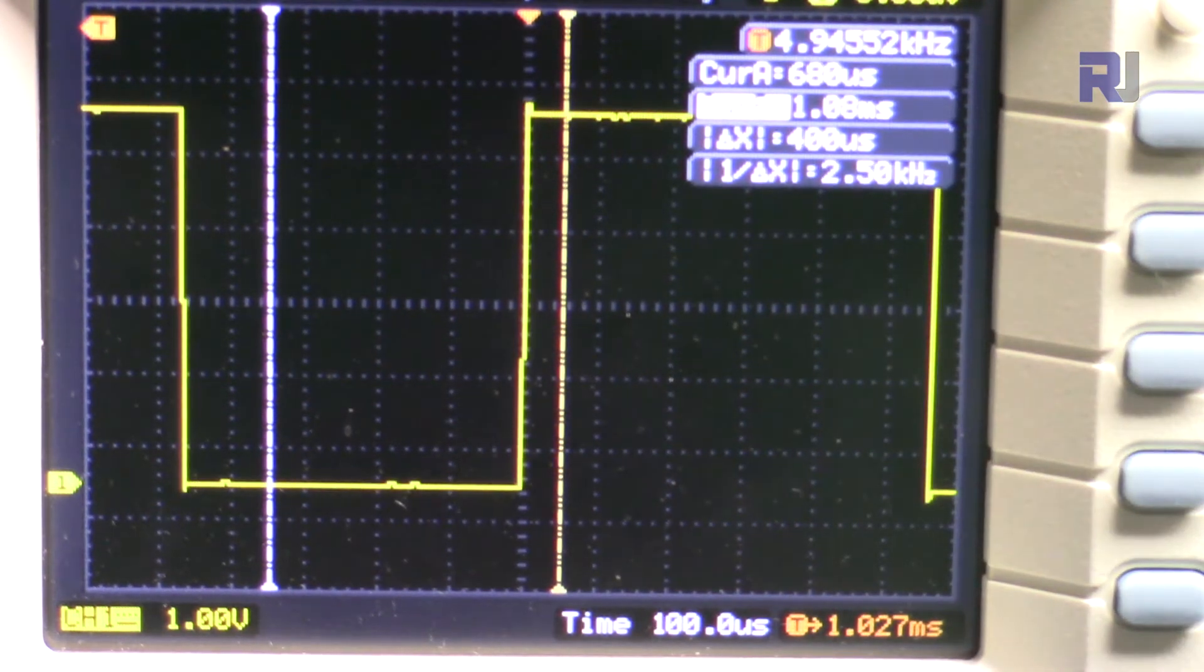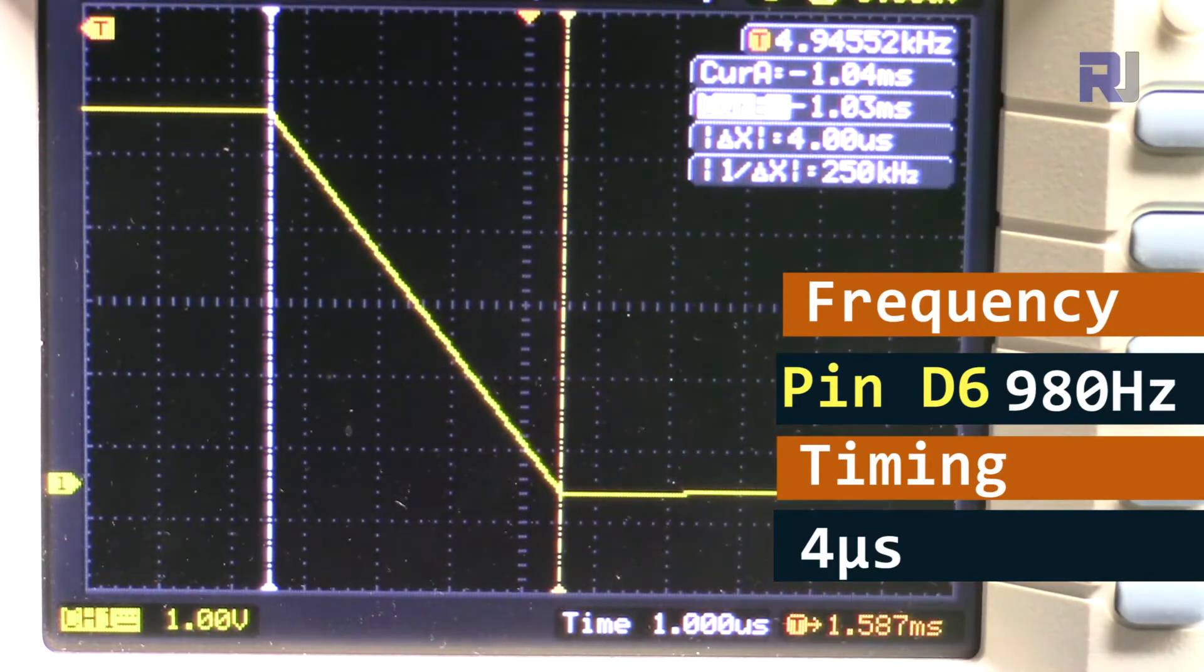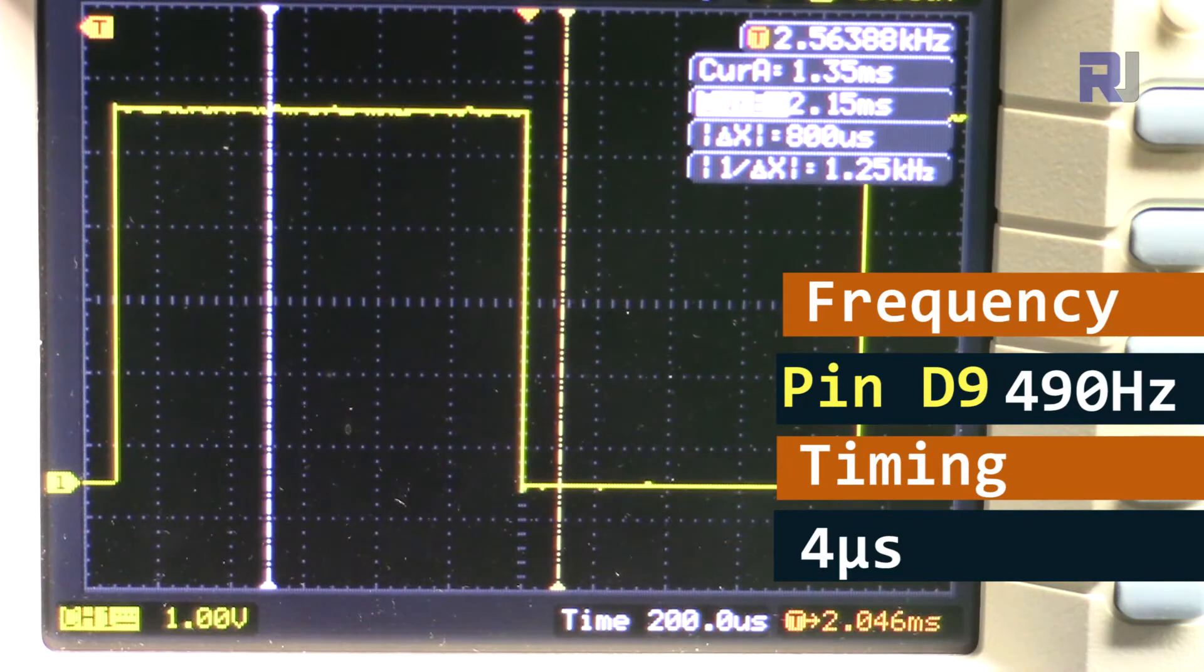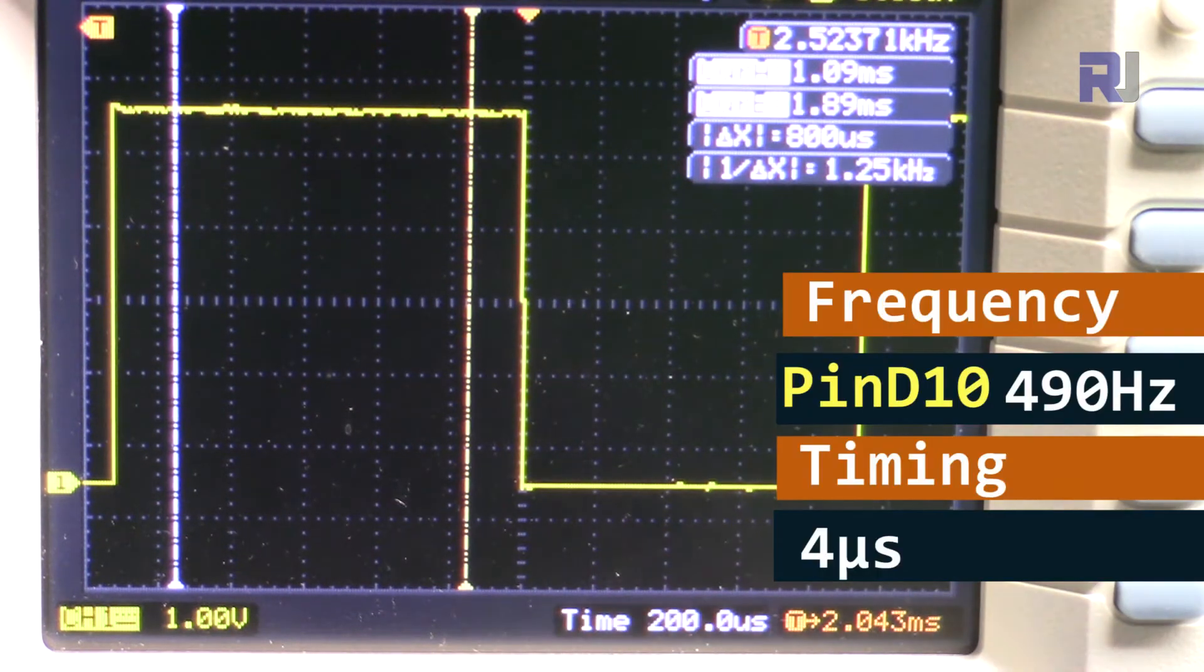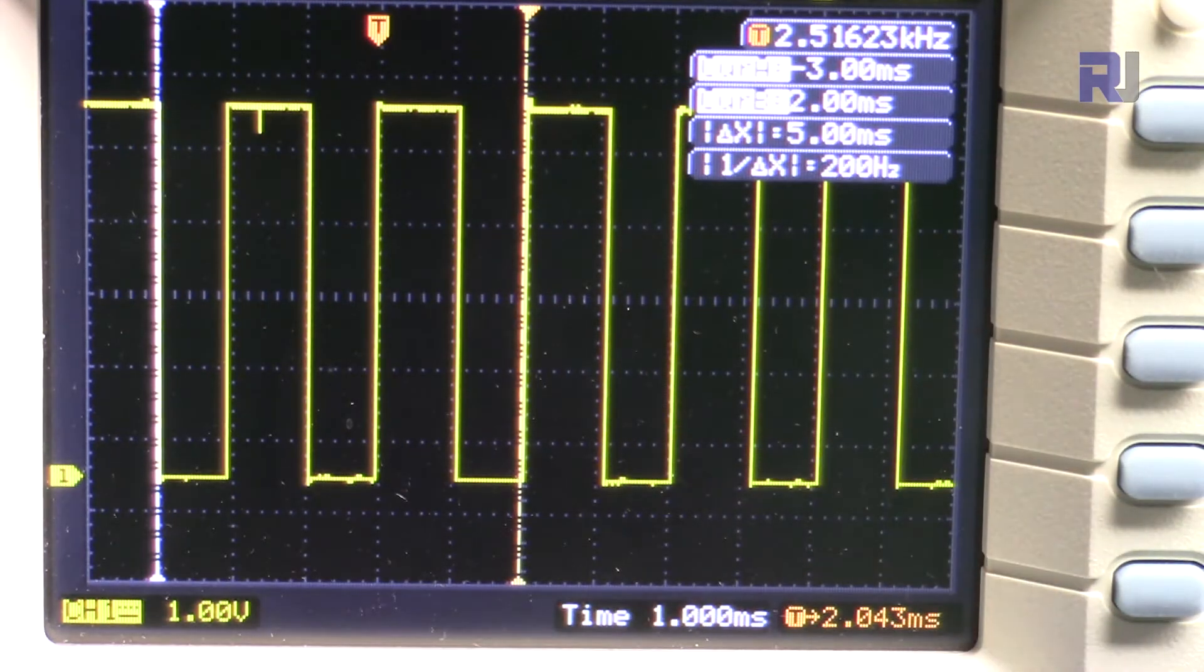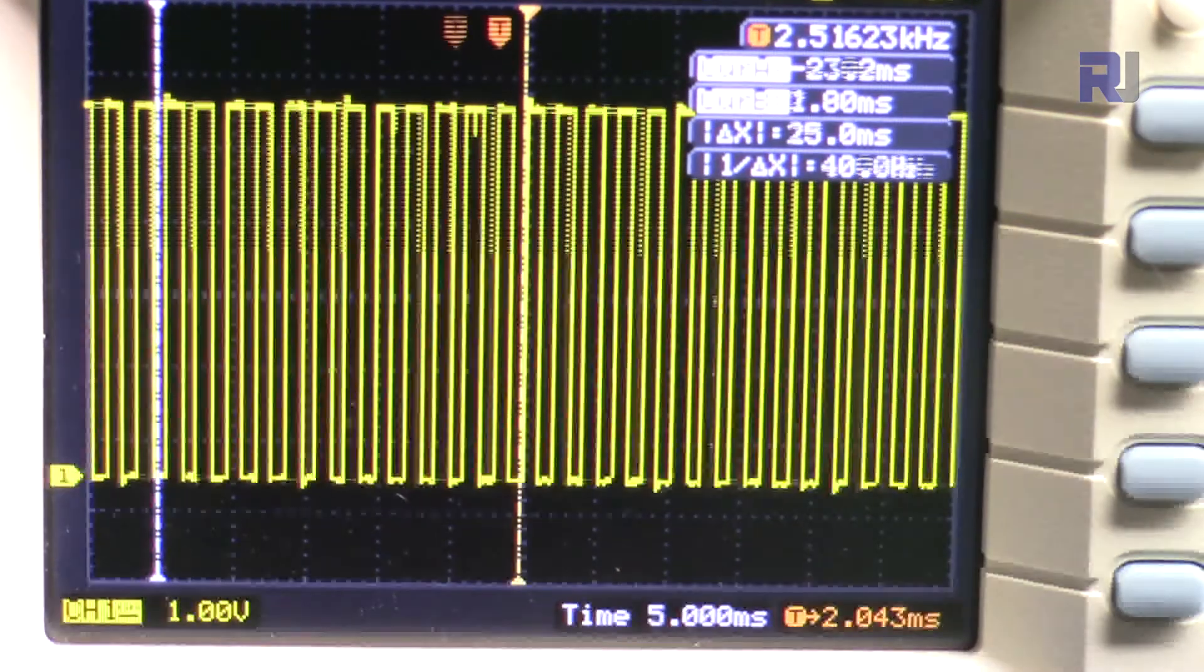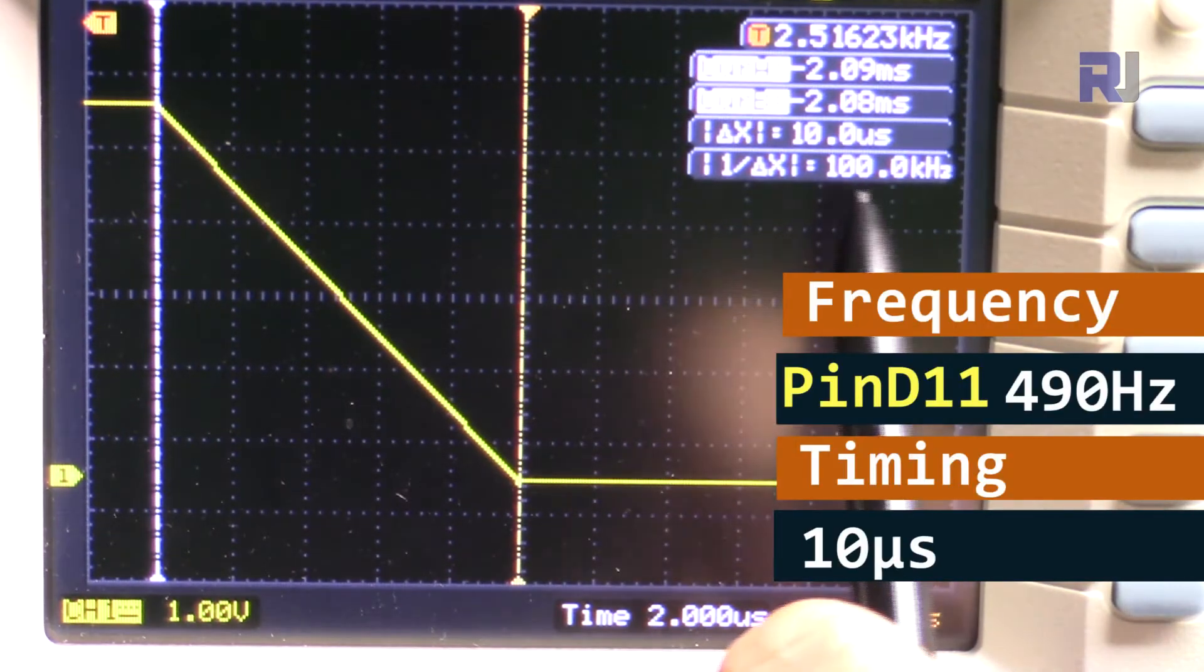This is pin 9, let's check the rising time: 4 microseconds, and falling time: 4 microseconds. And the falling time for pin 10. This is pin 11, let's check the rising time: very slow, 10 microseconds, 10 times slower. And the falling time: 10 microseconds.